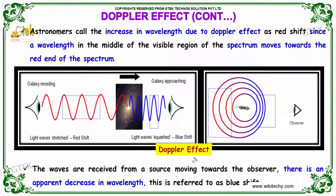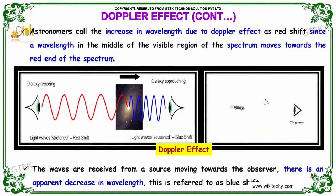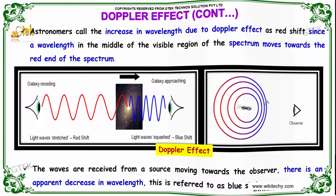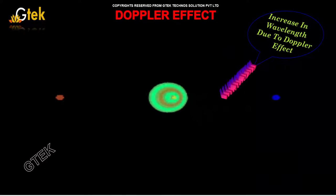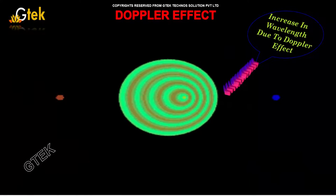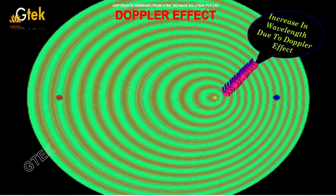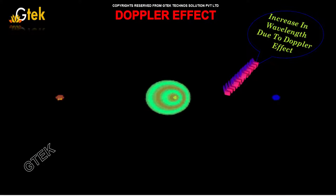The waves are received from a source moving towards the absorber. There is an apparent decrease in wavelength. This is referred to as blue shift. You are able to see this is how the blue shift is happening and this is your red shift.